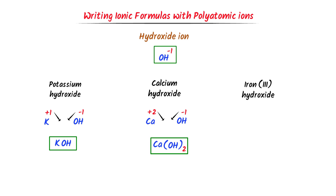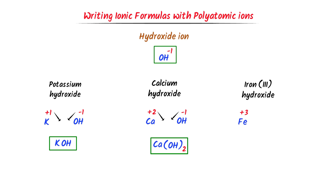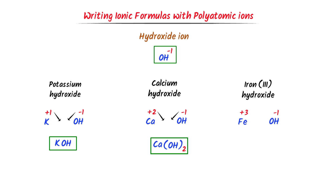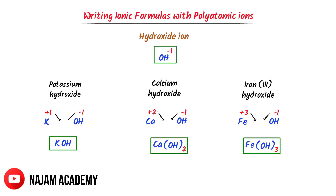Thirdly, in case of iron hydroxide, the 3 with iron means the oxidation state of iron is positive 3 in this compound. The charge on hydroxide ion is negative 1. I cross their respective charges and I get Fe(OH)₃. Using this simple method, we can easily write the chemical formulas of ionic compounds with polyatomic ions.